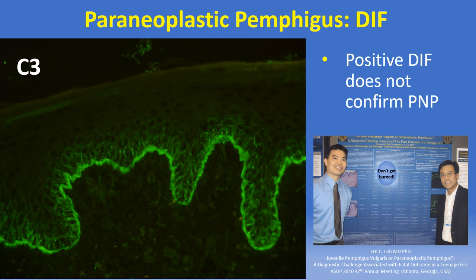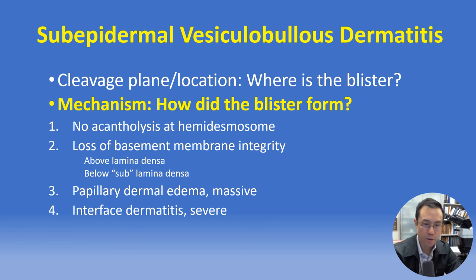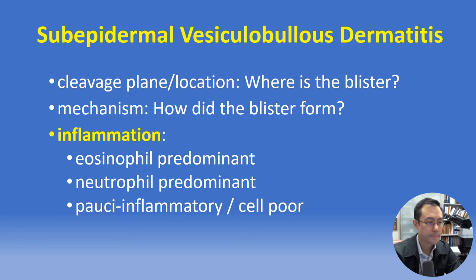Let's now look at subepidermal blistering disorders. At the H&E level the cleavage plane is at the DE junction, and we are frequently limited in how much we can say about mechanisms of subepidermal blister formation — we cannot see acantholysis at the hemidesmosome, we can't tell if the split is above or below the lamina densa. Unless we see marked papillary dermal edema or severe interface changes, there's not much we can say beyond 'subepidermal split.' However, we do have a third approach: the character of the inflammatory host response, allowing us to substratify by eosinophil-predominant versus neutrophil-predominant versus cell-poor.